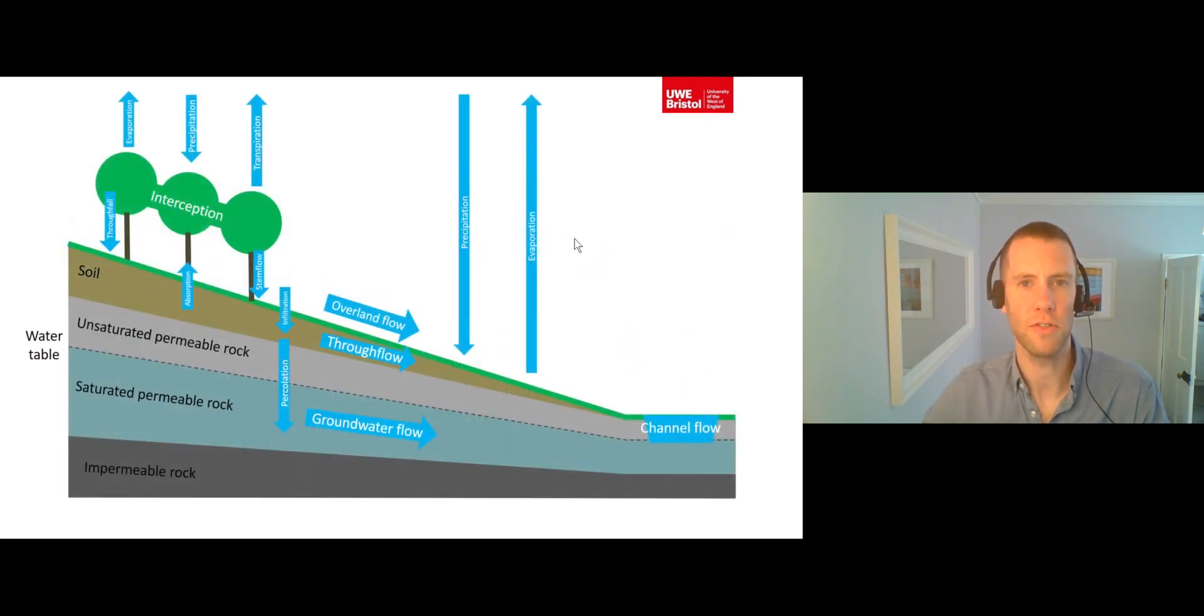This diagram shows where all of those inputs, processes and outputs occur on a drainage basin's hill slope. Pause the video again now to enter the inputs, processes and outputs into the correct places within the version of this diagram that is within your worksheet.